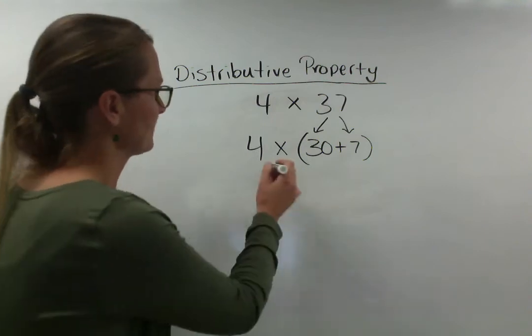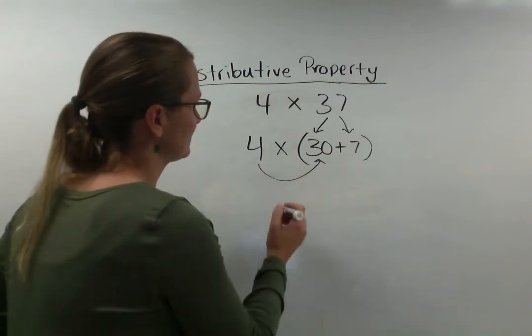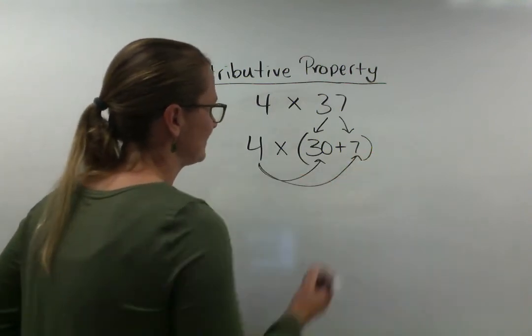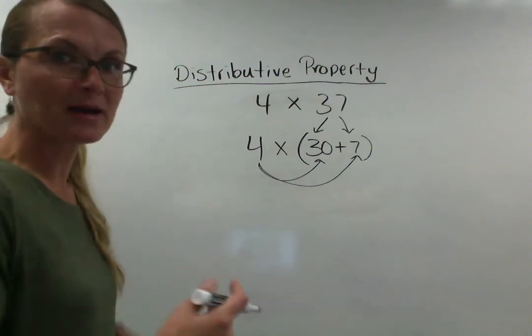So how do I make it easier? I'm going to multiply the 4 times the 30 and the 4 times the 7. And once I get those two answers I'm just going to add them back together.